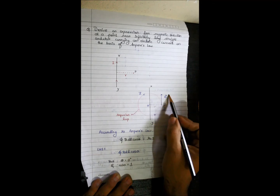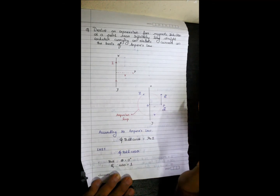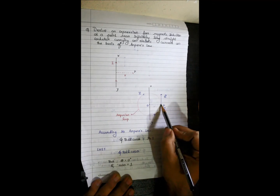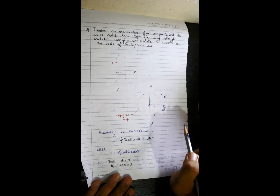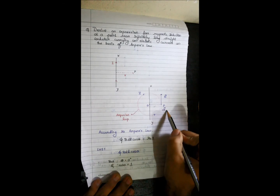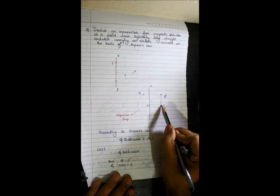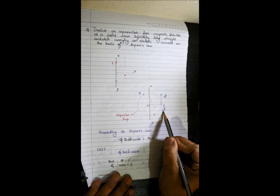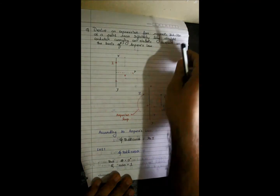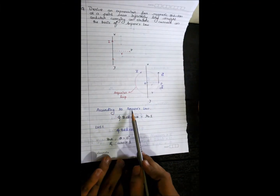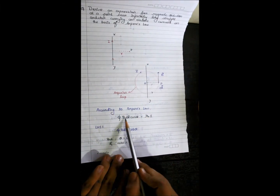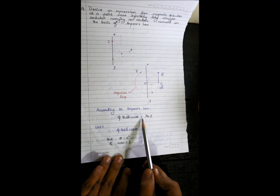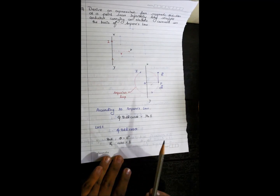My magnetic induction B will always act in a tangential manner to my circle on a very small length DL. At point P, my magnetic induction acts tangentially; I take a small length DL. According to Ampere's law: ∮BdL cosθ = μ₀I. Now we simplify this in the form of LHS and RHS.